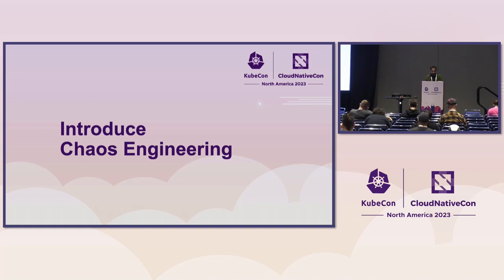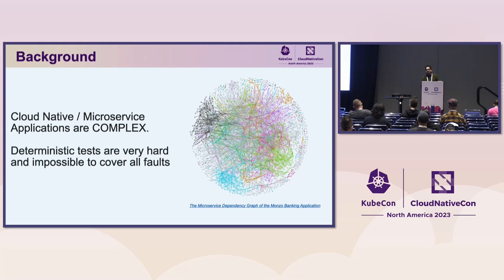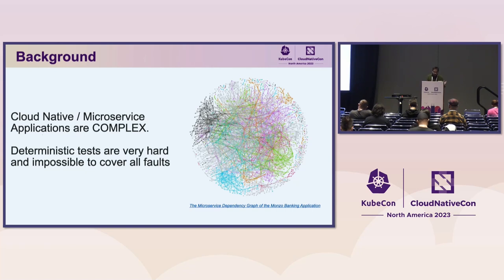Starting off by introducing Chaos Engineering. Before we delve into the discussion, we need to understand the current context. Systems are complex — with the rise of microservices adoption, the complexity of applications is steadily increasing, and even the best-in-class engineers find it hard to battle the complexity. In these scenarios, conducting testing is extremely difficult, especially to cover all corner cases. This is where Chaos Engineering comes into play.